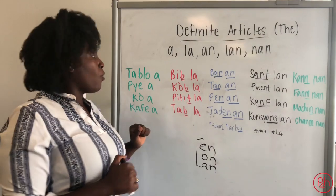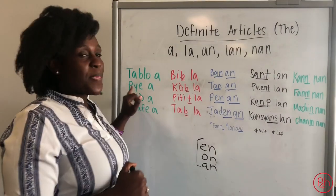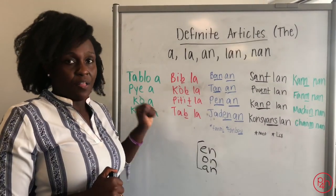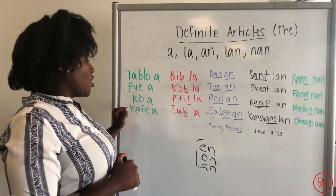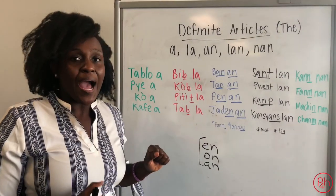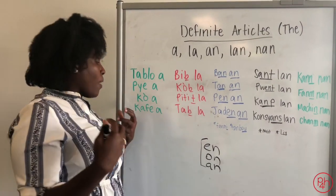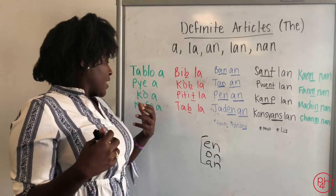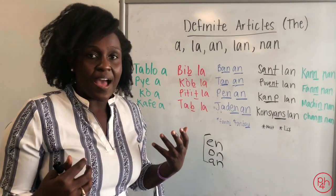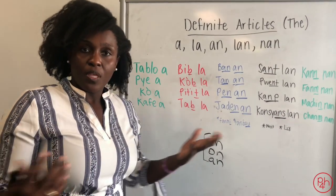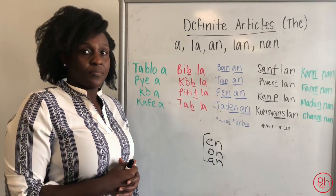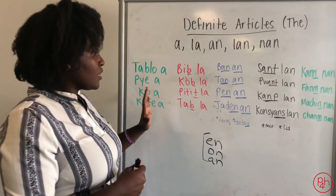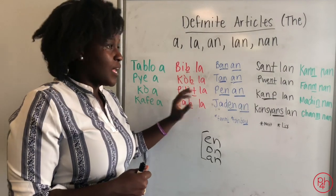Examples: Tablo-a, the board. Pye-a, the foot. Ko-a, the body. Kafe-a, the coffee.